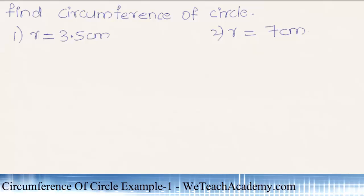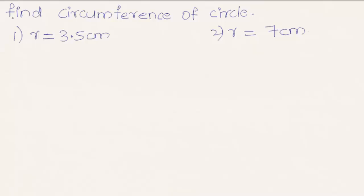Hey guys, welcome to vteachacademy.com. In this presentation we are going to discuss an example on circumference of a circle. The given example is to find the circumference of a circle where radius is equal to 3.5 centimeters and where radius is equal to 7 centimeters.